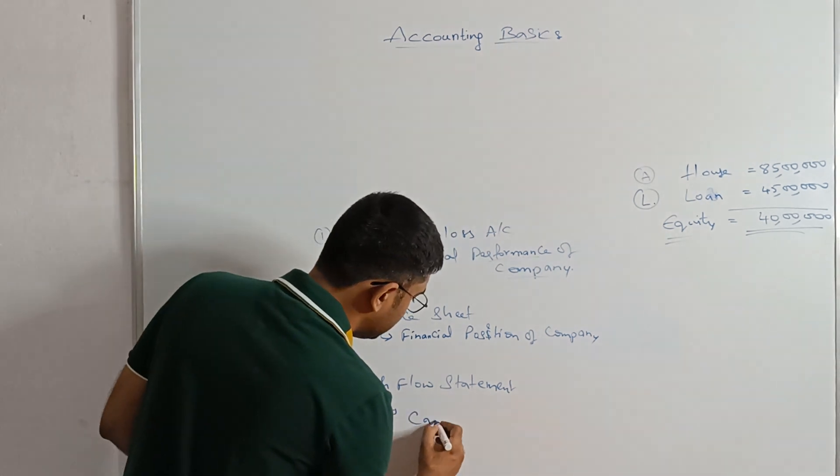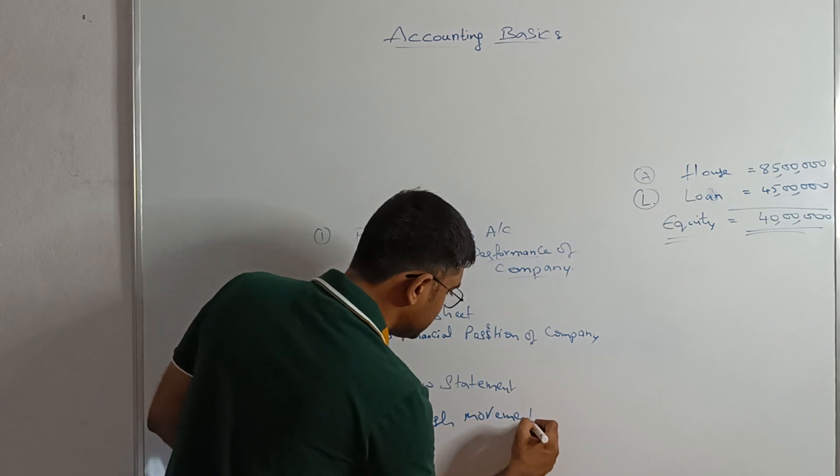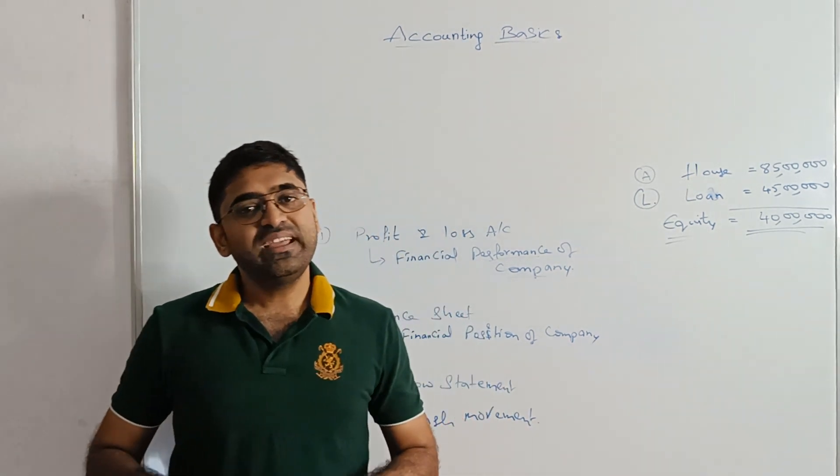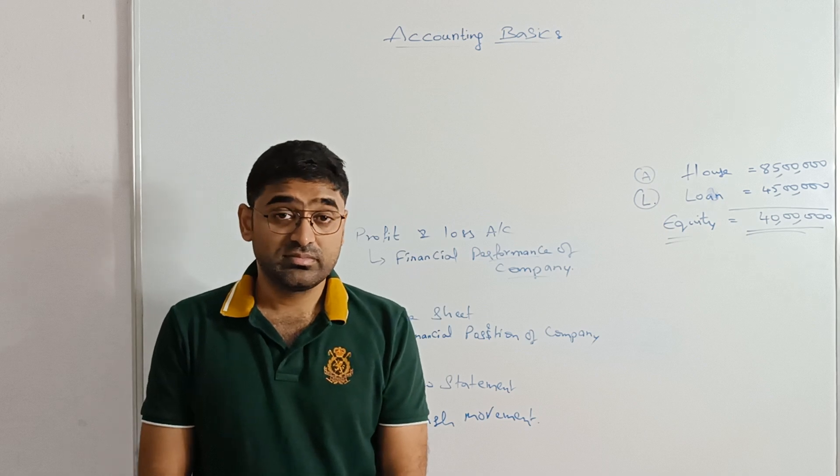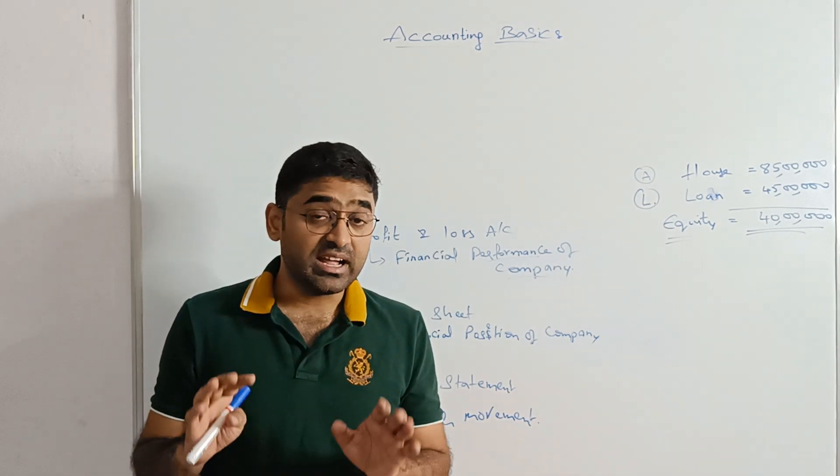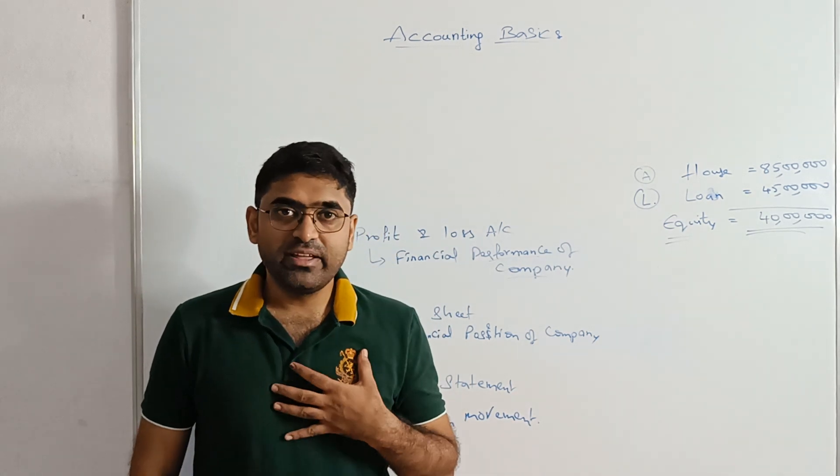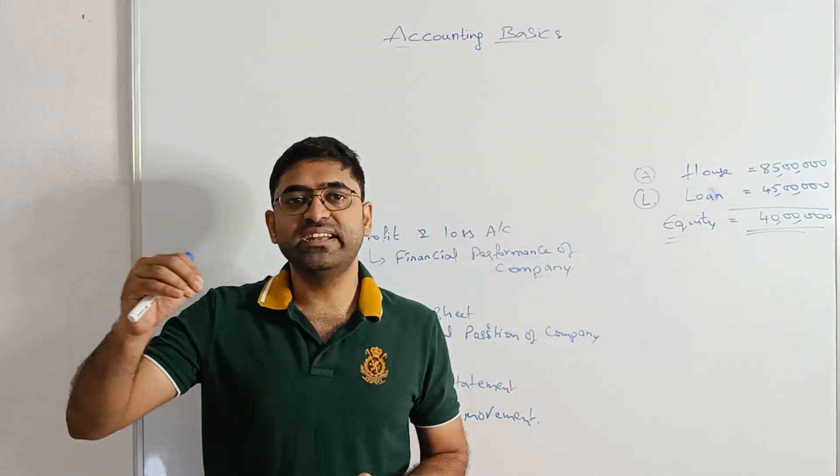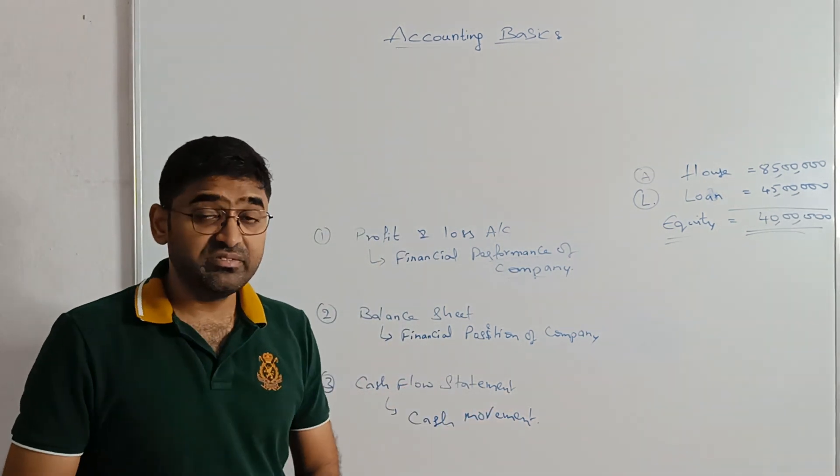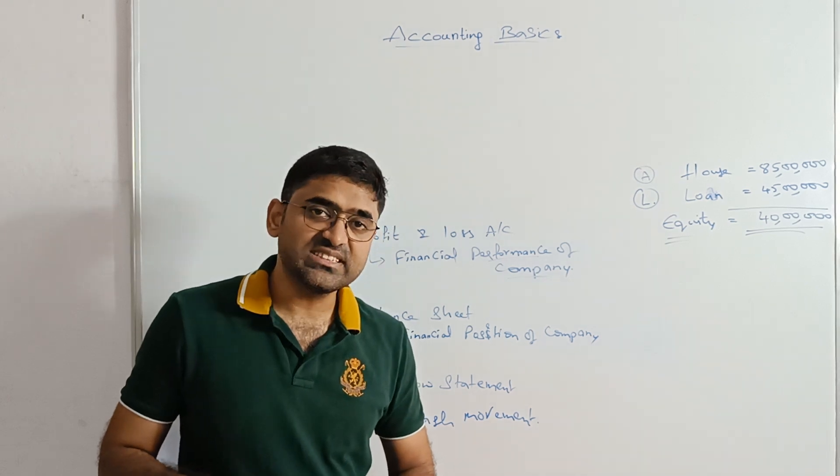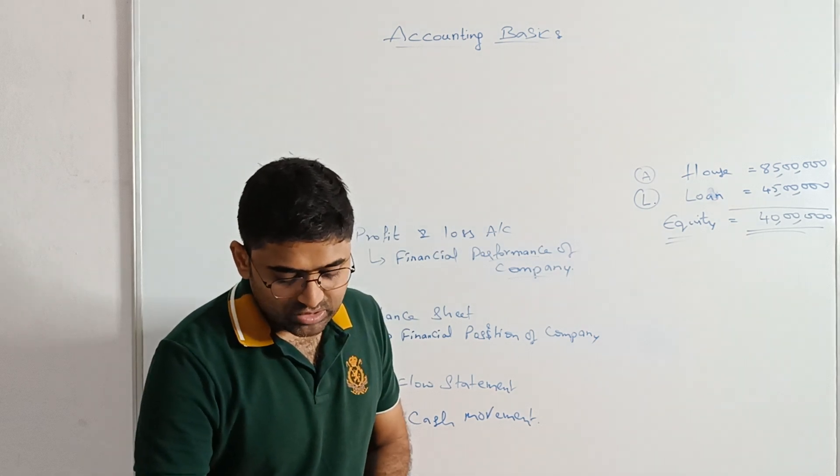Then the final one is cash flow. Cash flow statement talks about cash movement. When you say cash movement what happens? Sometimes the company has made huge sales but they are not receiving money from the customers. What can we do now? Whether I receive from the customer or not I am supposed to pay to my vendors or suppliers. So I need to be very careful about how much money I have and how much I need to pay. To know that I need to prepare a cash flow statement which talks about the cash position of the company, how much cash I have, how much cash I need to pay to someone.